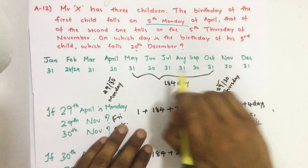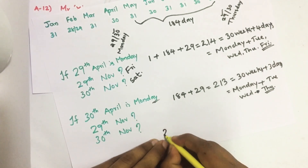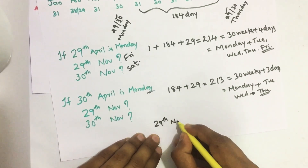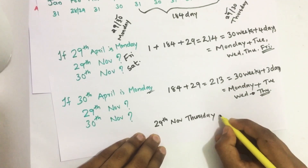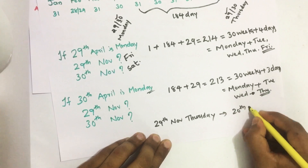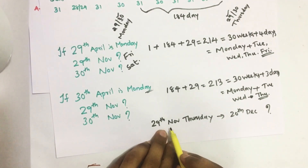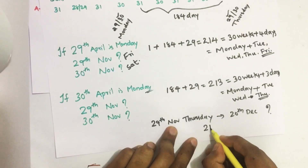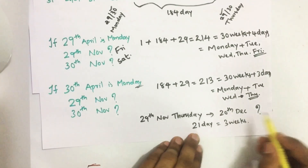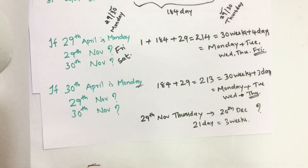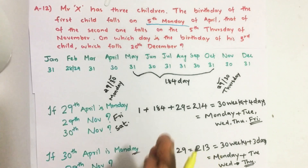Based on this, we find on which day is the birthday of the third child which falls on 20th December. Since 29th November is Thursday, we need to find what day 20th December is. From 29th November to 20th December there are 21 days, which is equal to 3 weeks. So at the end of the third week it will be again Thursday. That means 20th December is Thursday. So the answer is: the third child's birthday falls on Thursday.